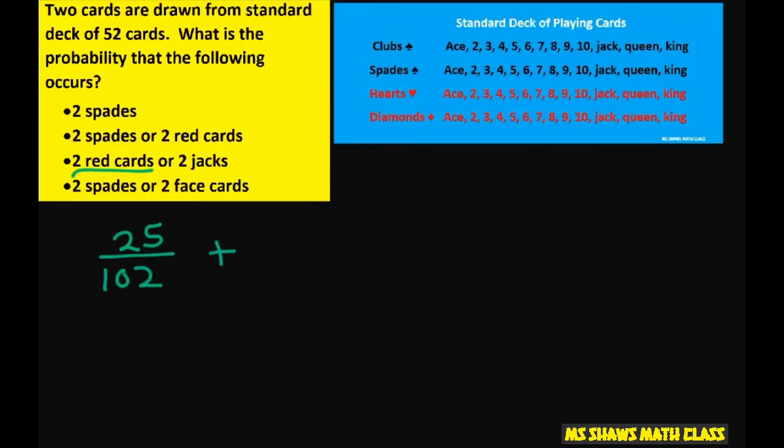Or two jacks. So the jacks, we have four jacks. So let's do the four jacks: 4 out of 52 times 3 out of 51, because you don't replace it. However, we already counted the two red jacks into this first part because we already counted our red cards. So we're going to have to subtract 2 divided by 52 times 1 divided by 51.